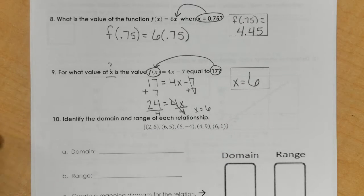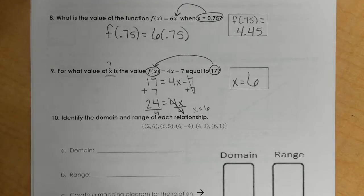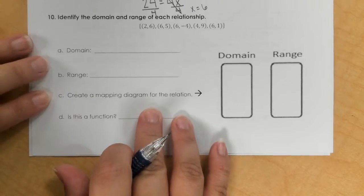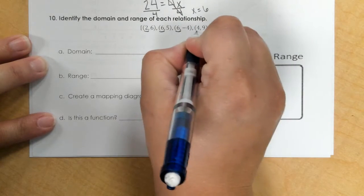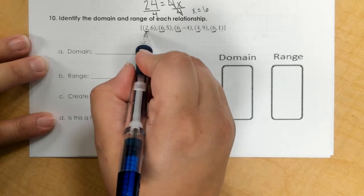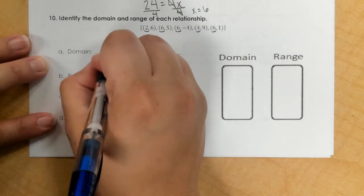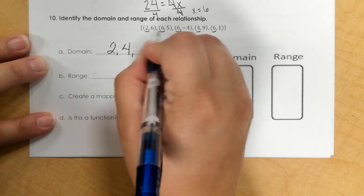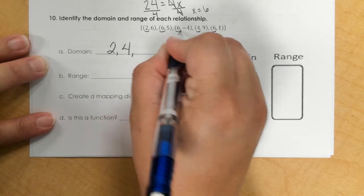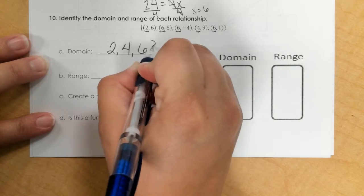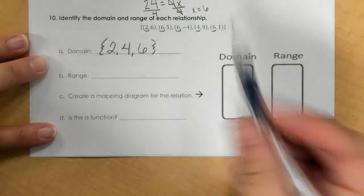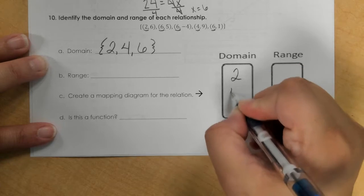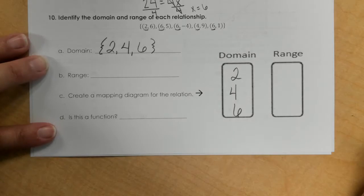For number 10, identify the domain and the range of each relationship. For the domain, we have our x's, which is the first number of each ordered pair. I have 2, 4, and three 6's. So I write it one time. So I can put 2, 4, and 6 in the domain of the mapping diagram.